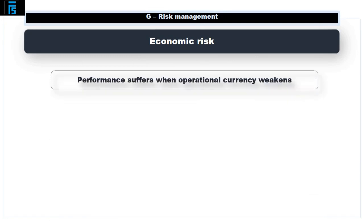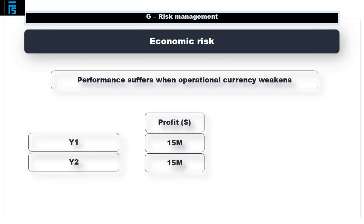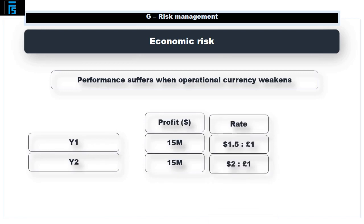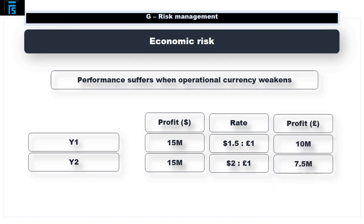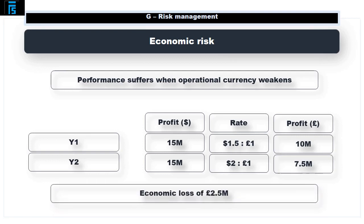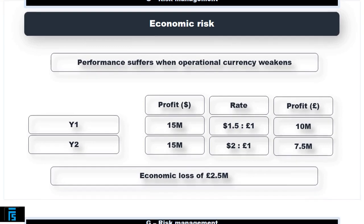Economic risk is the risk that the currency in a country where we operate will weaken, thereby reducing the equivalent performance expressed in domestic currency terms. For example, imagine a business makes a profit of $15 million each year in two consecutive years. The average exchange rate was $1.5 to the pound in year one and $2 to the pound in year two, producing a profit expressed in pounds of £10 million in year one, whilst only £7.5 million in year two. Although in dollar terms the performance has been maintained, expressed in pounds the performance appears lower in year two than in year one.